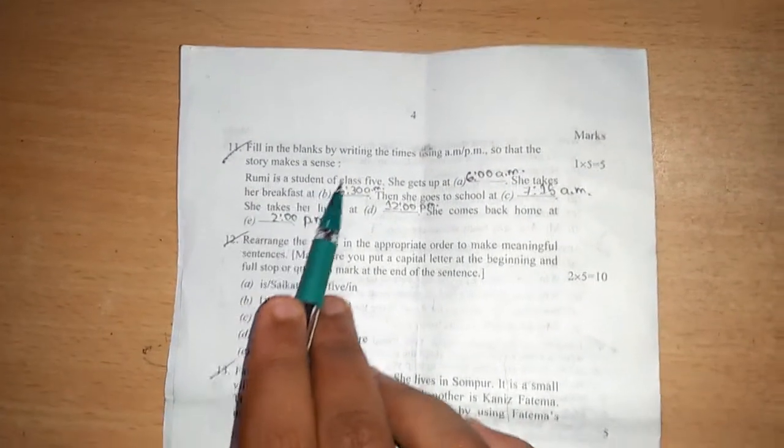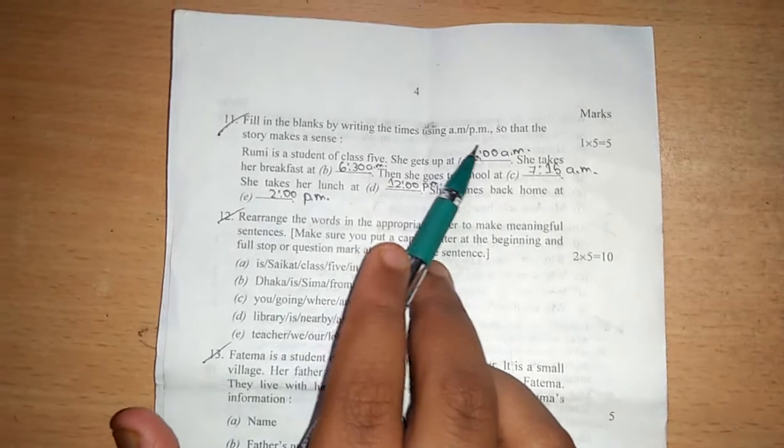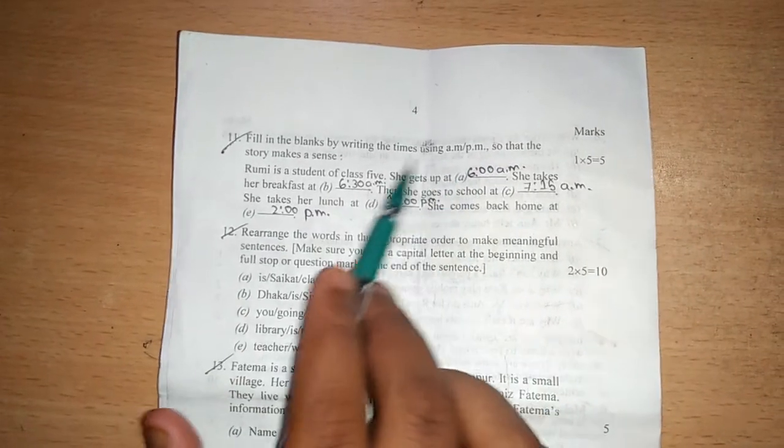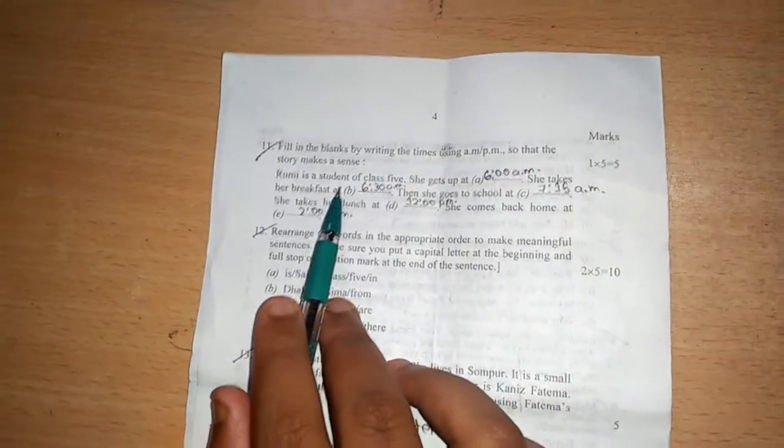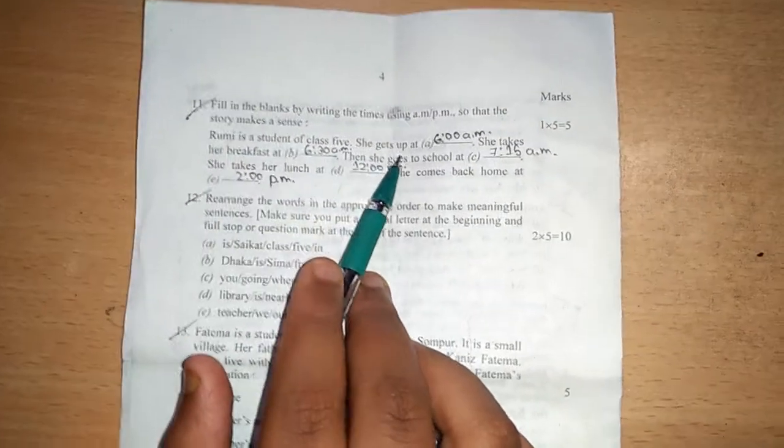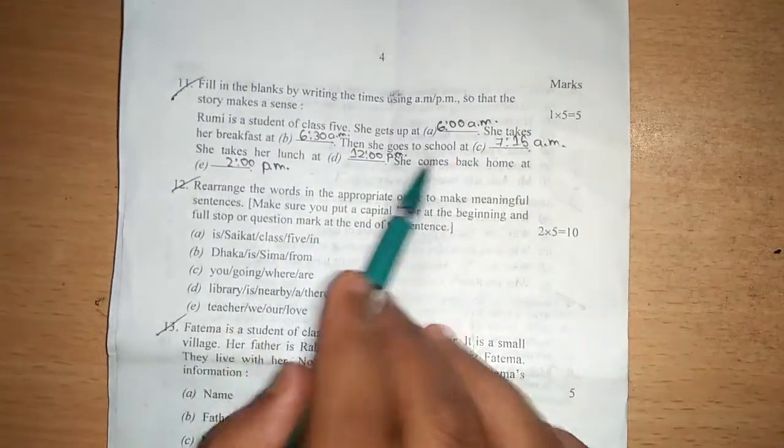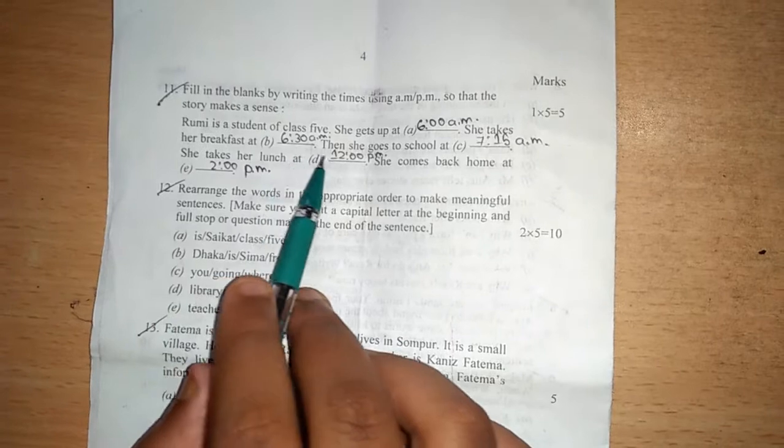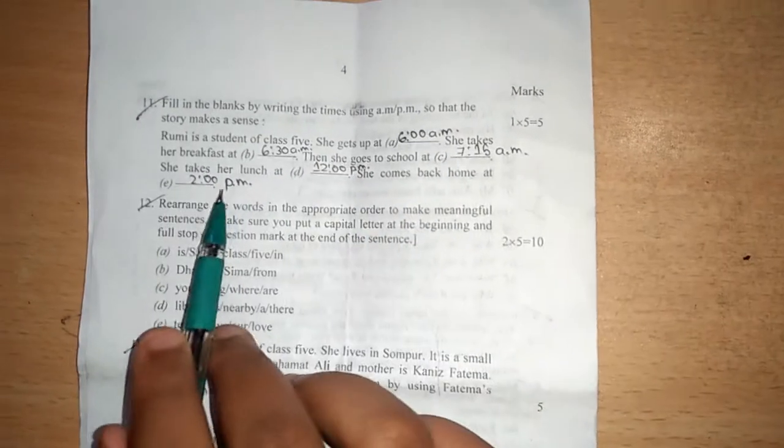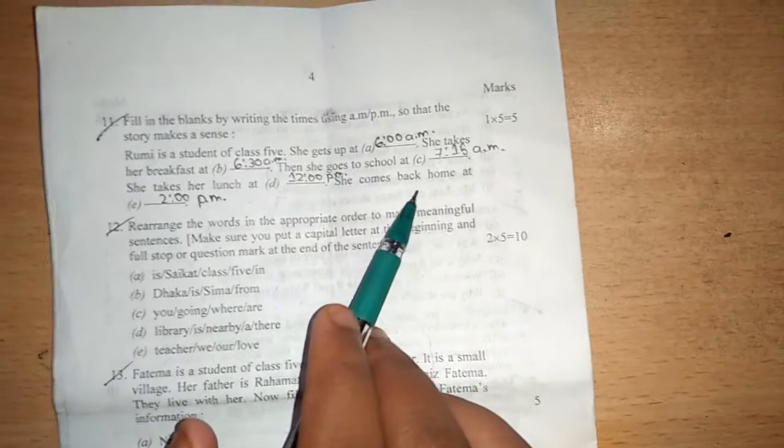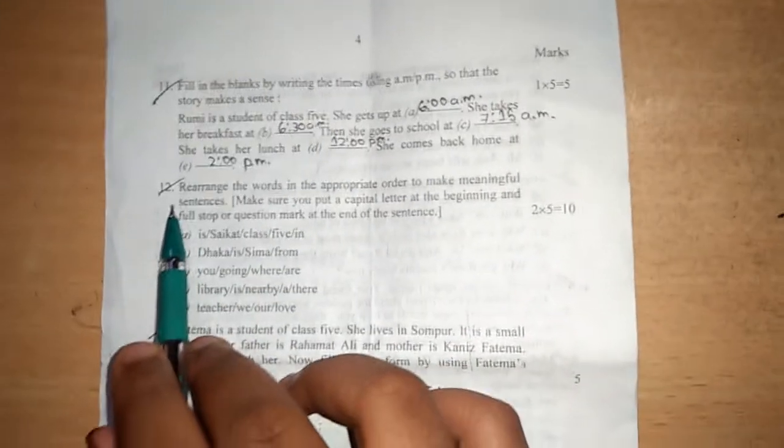Now number eleven, fill in the blanks by writing the times using AM, PM so that the history makes sense. Rumi is a student of class five. She gets up at dash. She takes her breakfast at dash. Then she goes to school at dash. She takes her lunch at dash. She comes back home dash.